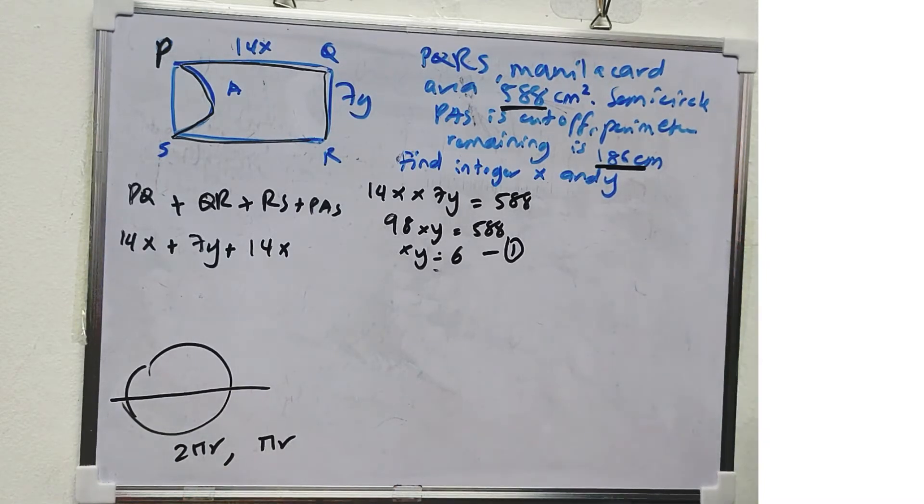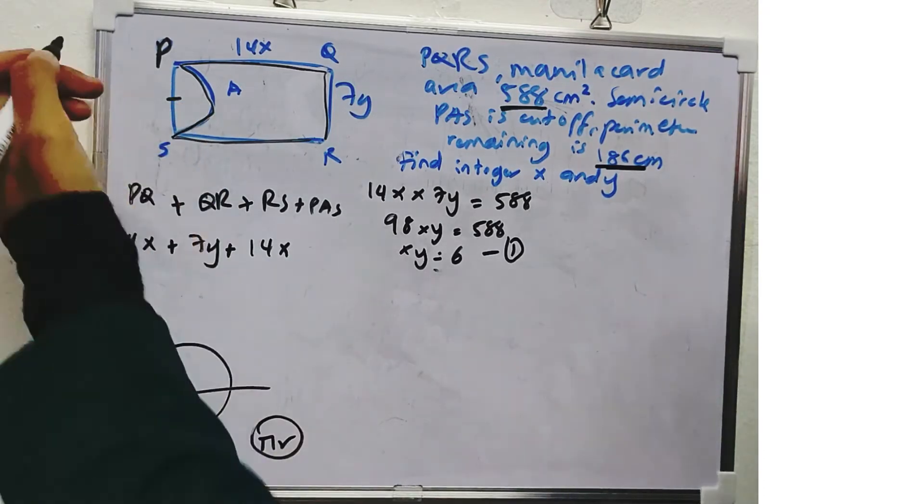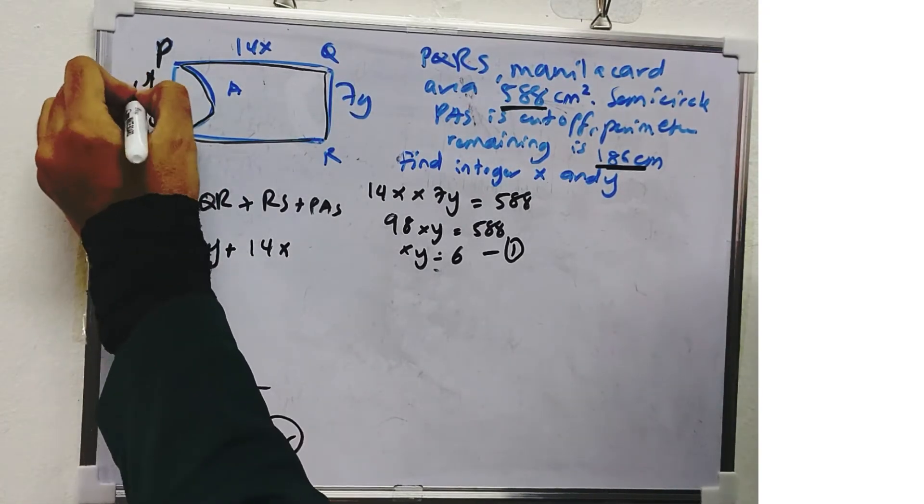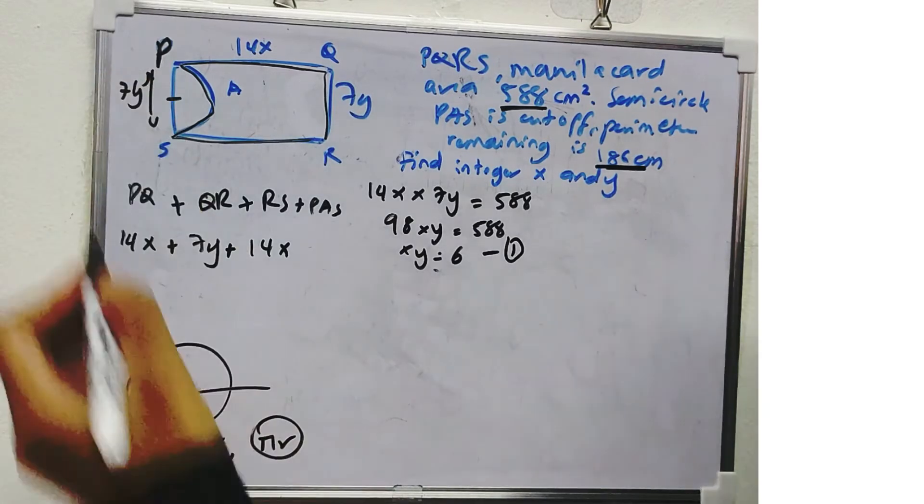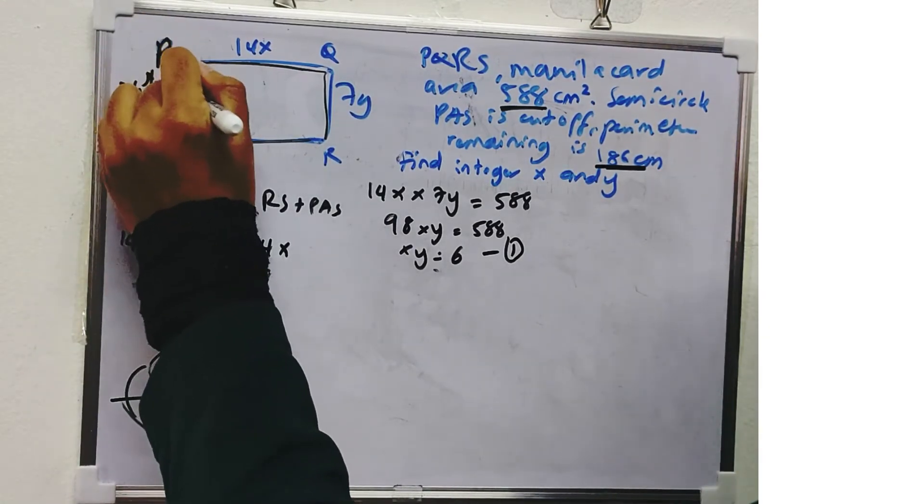So we see here, π and R. So this one, the length is 7Y. So the radius is 7 over 2Y.